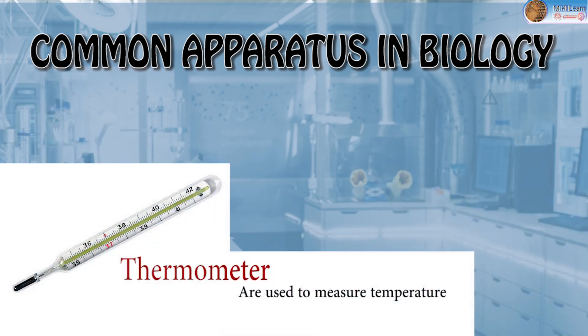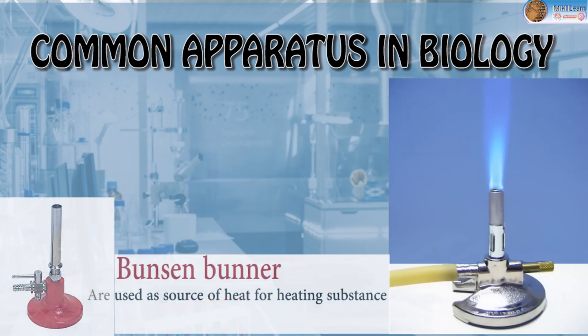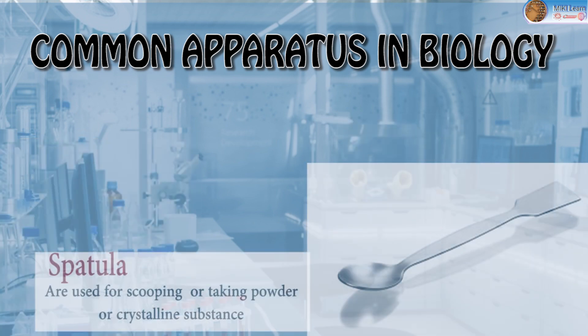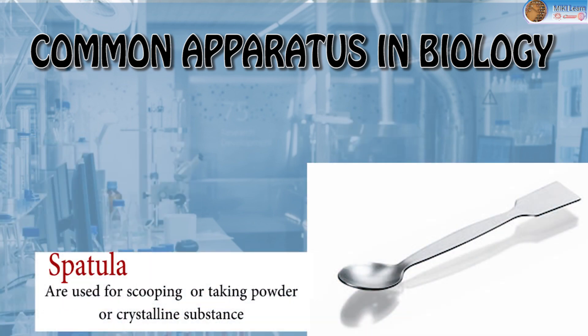Thermometer: used to measure temperature. Bunsen burner: used as a source of heat for heating substances. Dropper: for adding liquids or chemicals during experiments drop by drop. Spatula: for scooping or taking powder or crystalline substances.